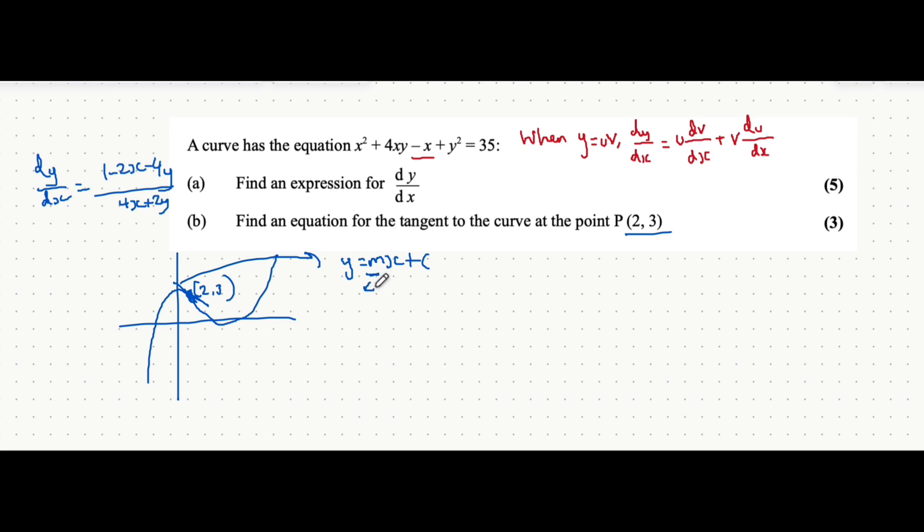Now m, the gradient of a straight line, is given by dy/dx. And we already have dy/dx don't we? But because we're looking for the gradient at this specific coordinate, what we can do is replace x with 2 and y with 3, and we'll get the specific dy/dx at that point. So let's do that. 1 minus 2x, well 2 times 2 is 4, and then minus 4 times y which is 4 times 3 which is 12, all over 4 times x which is 8 plus 2 times y which is 2 times 3 here which is 6. Adding all these together, 1 minus 4 is minus 3, minus 12 is minus 15, all over 8 plus 6 which is actually just 14. So that's the gradient of the tangent.